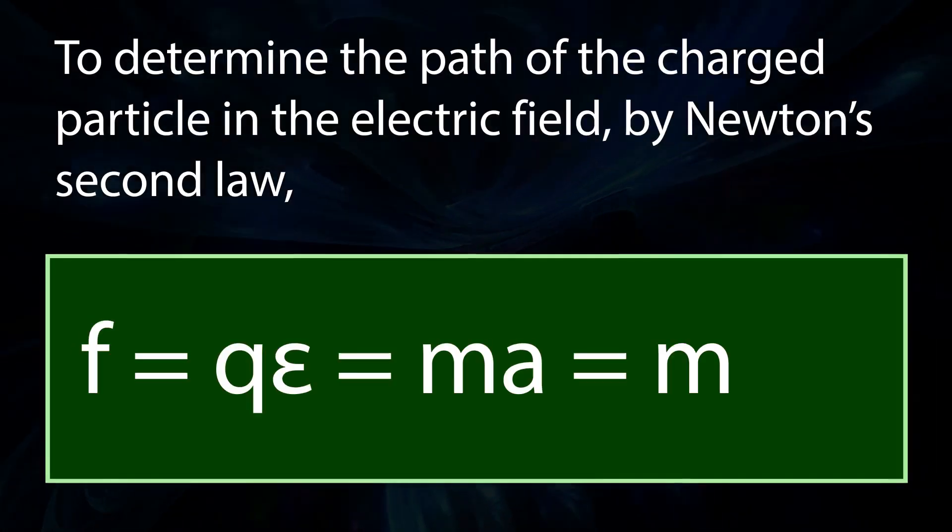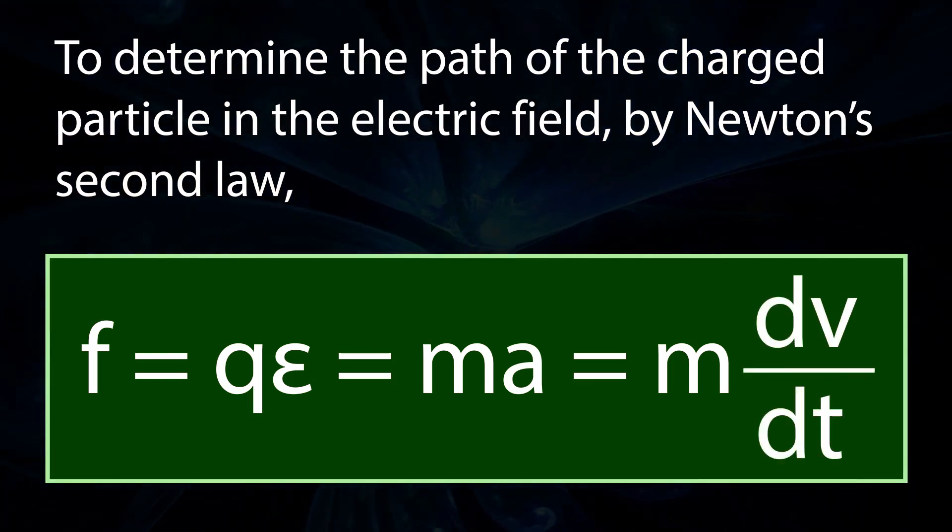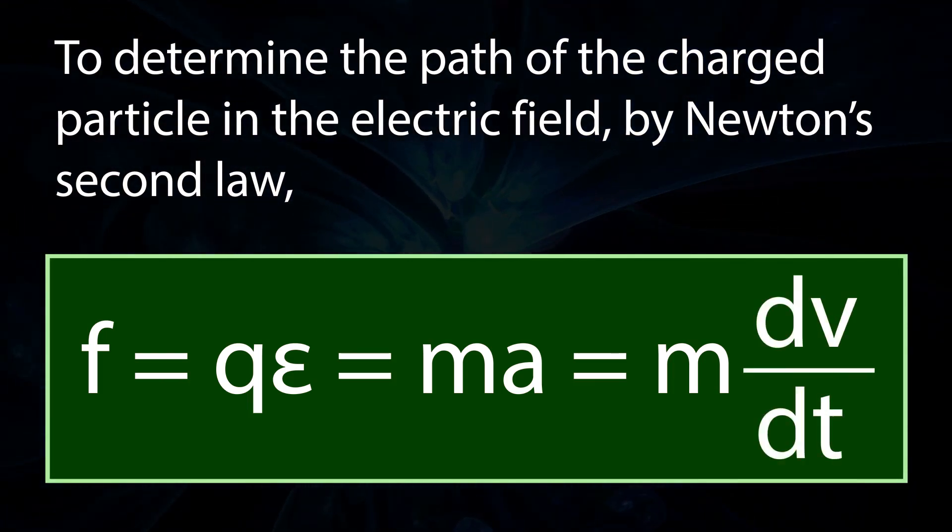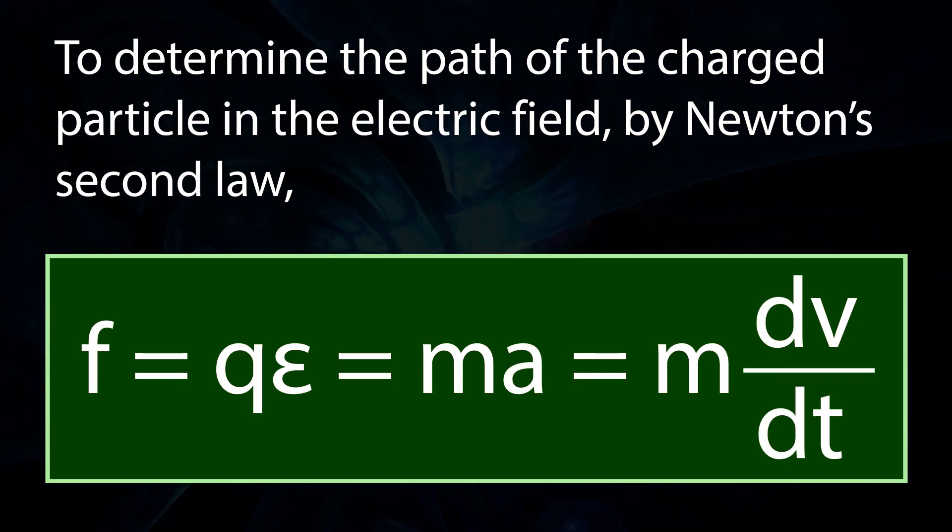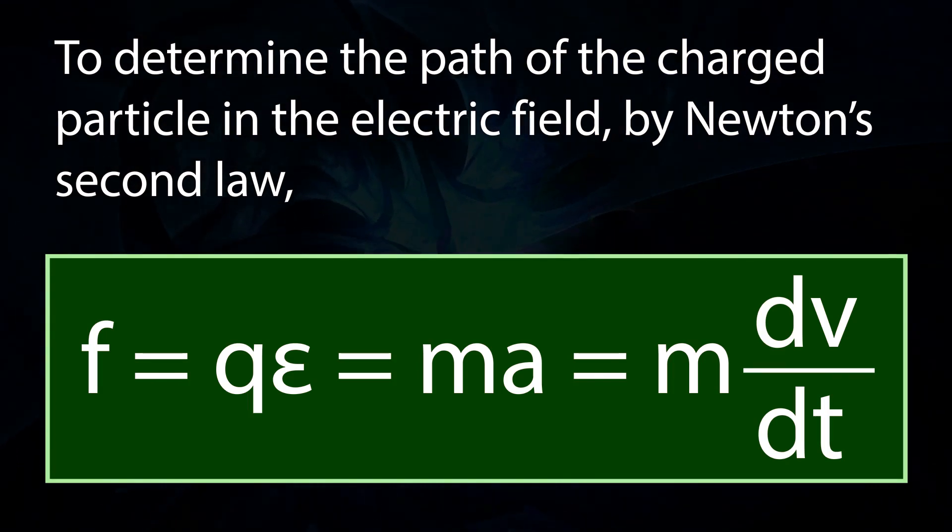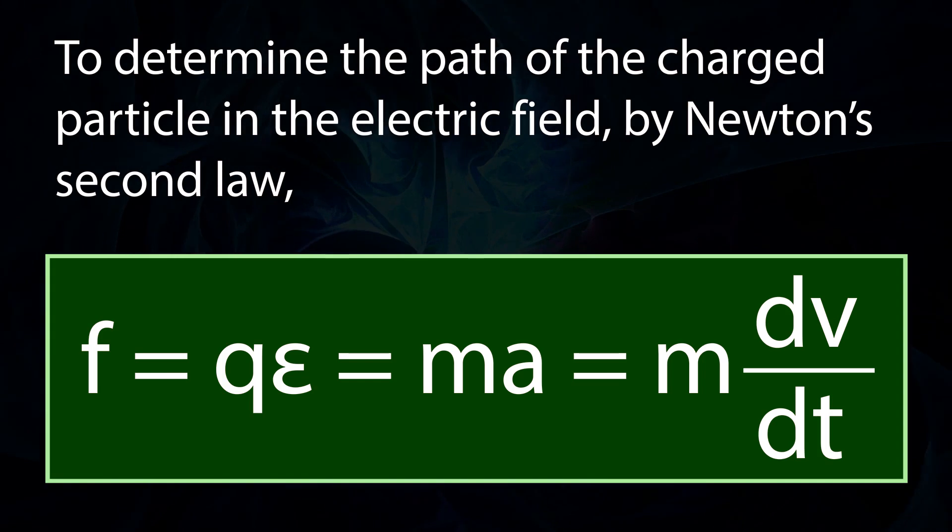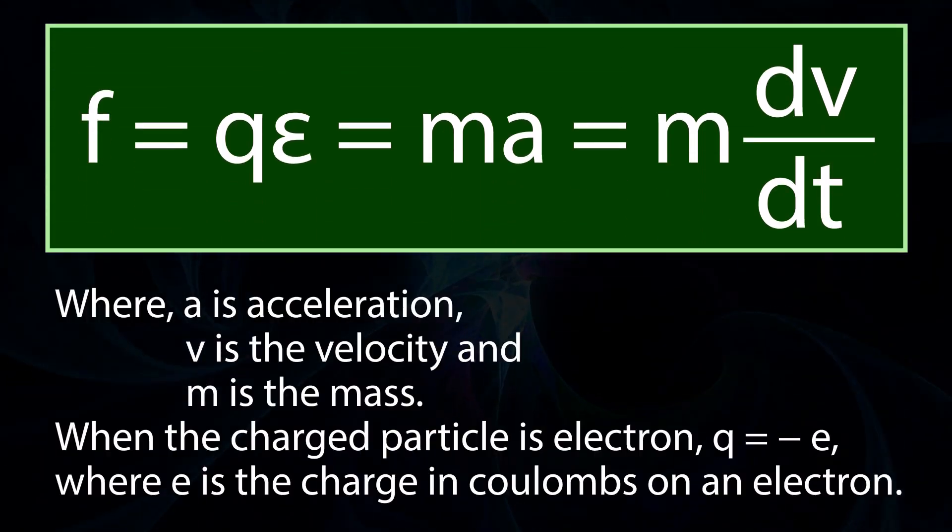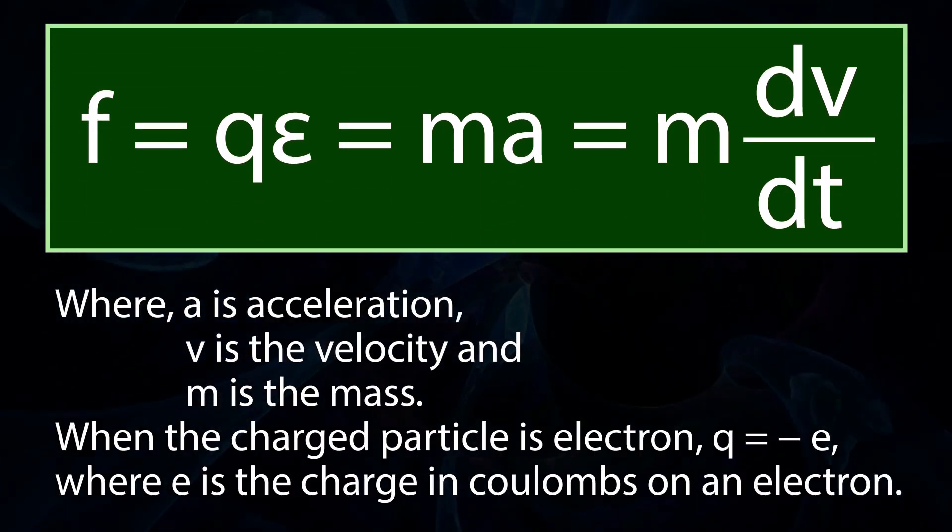To determine the path of the charged particle in the electric field by Newton's second law, f equals qε equals ma equals m times dv by dt, where a is acceleration, v is the velocity, and m is the mass.